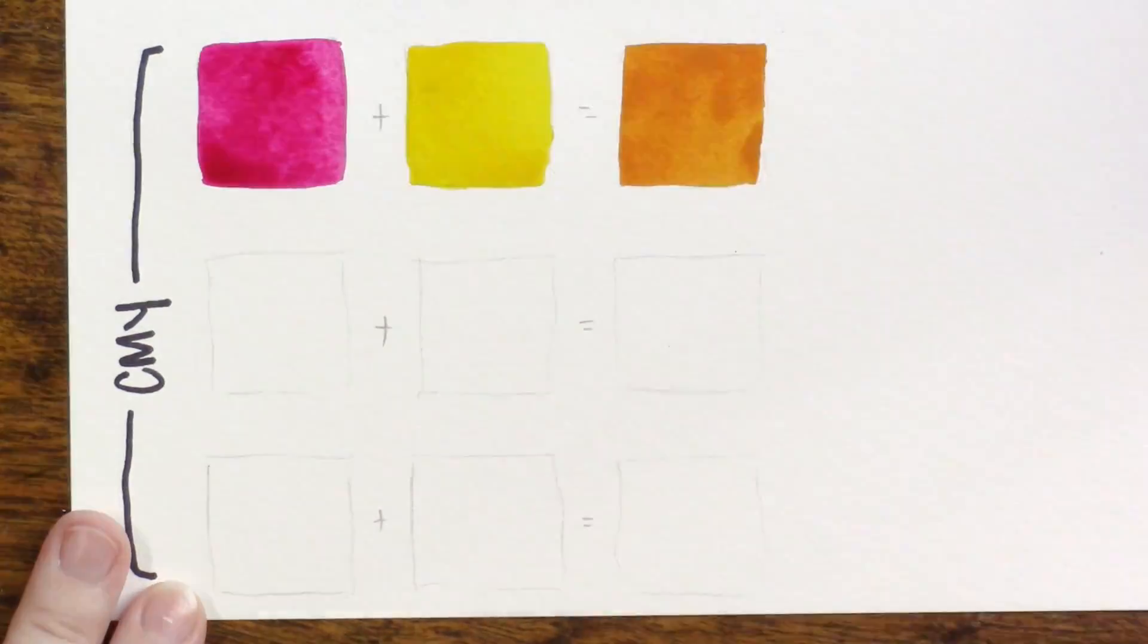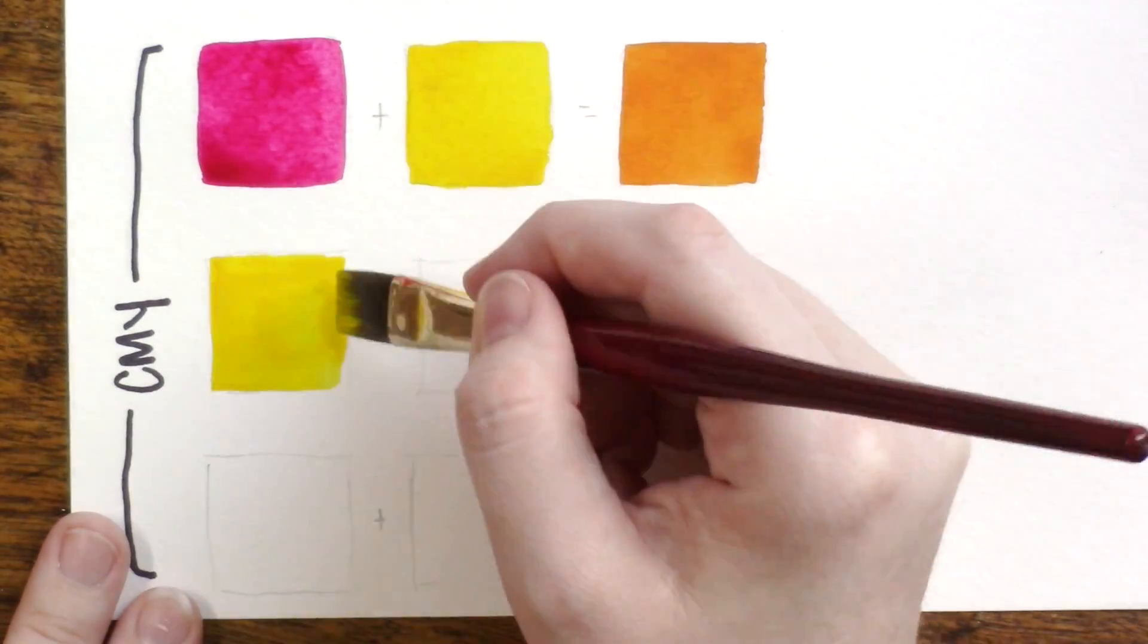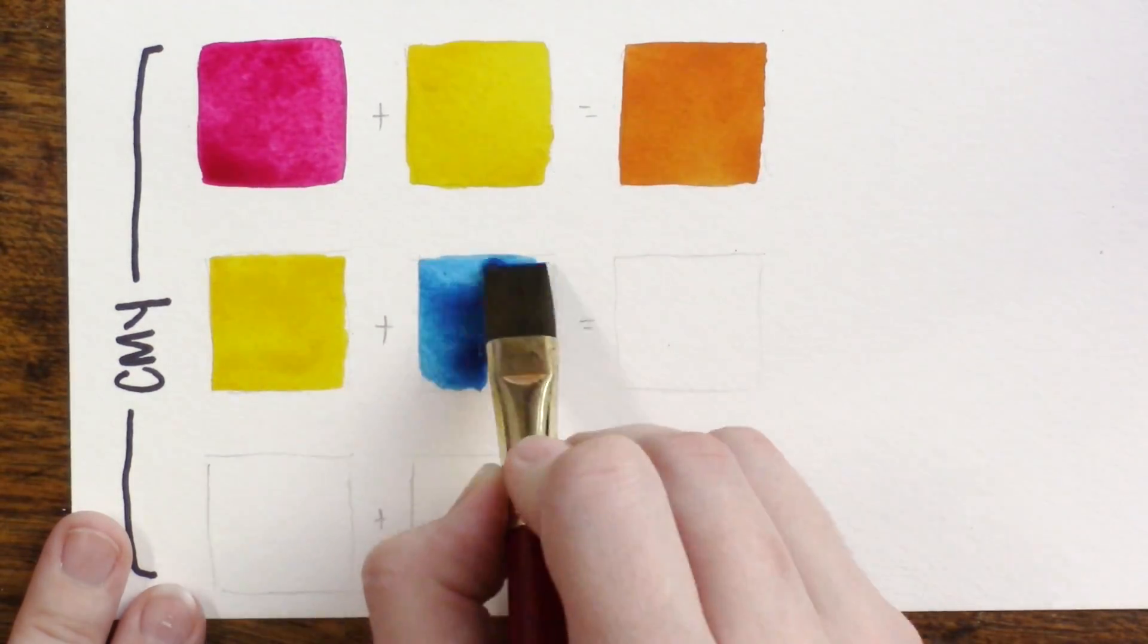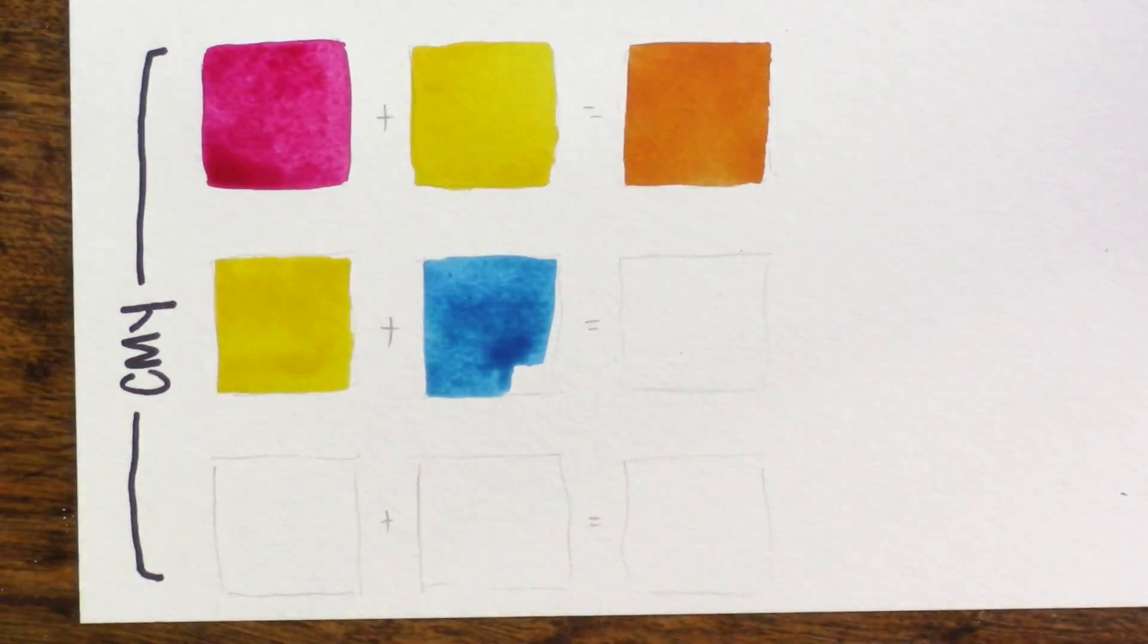I'm using the same yellow so I'm not changing that factor—the Permanent Yellow Light by Mission Gold. And I'm using Phthalo Blue Green Shade by Daniel Smith. The Phthalo blue is a little bit darker than cyan would be, however it is in the same hue and will work in this example.